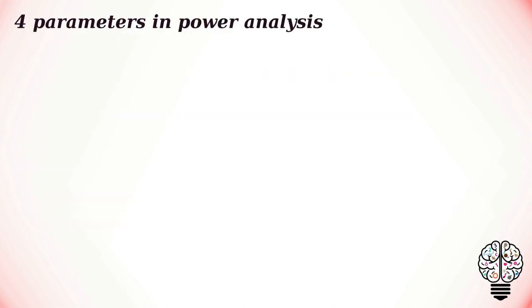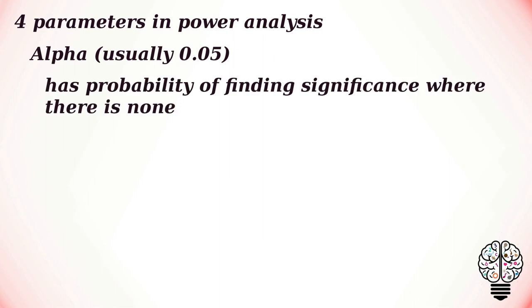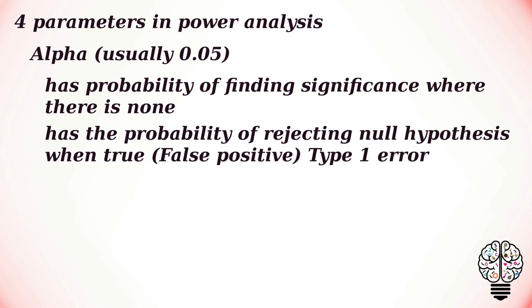There are four parameters involved in a power analysis. The first one is alpha, which is usually set at 0.05, which has the probability of finding significance where there is none. Alpha is the probability of rejecting the null hypothesis even though it is true, that is a false positive. Alpha is the probability of a type 1 error.